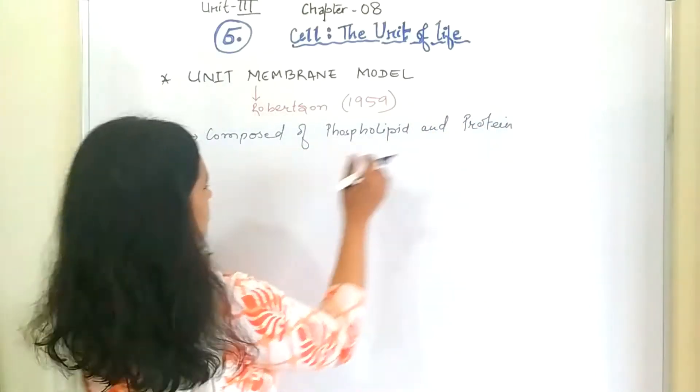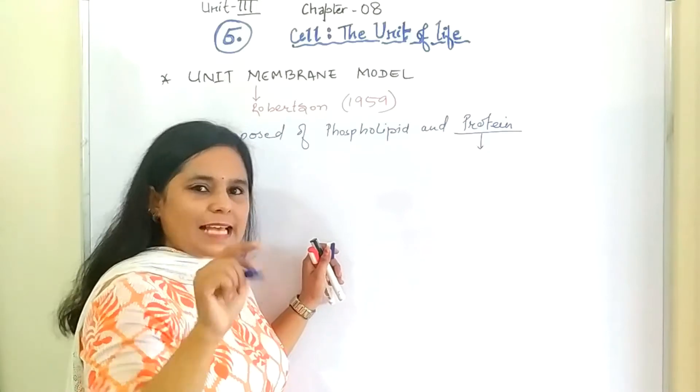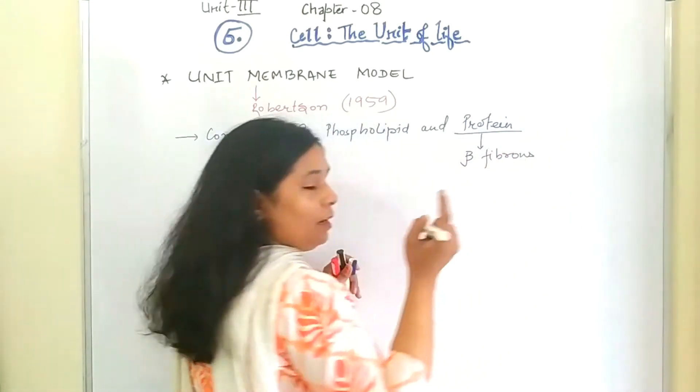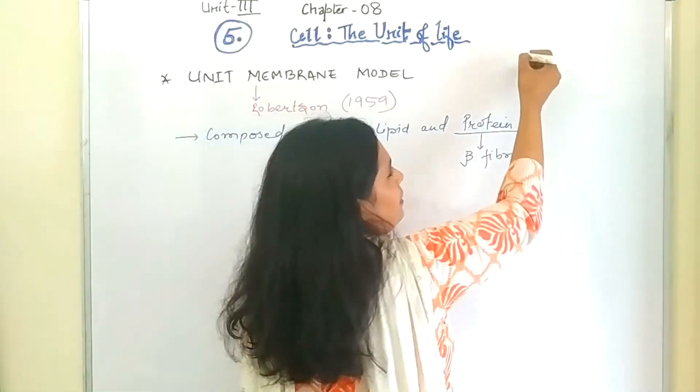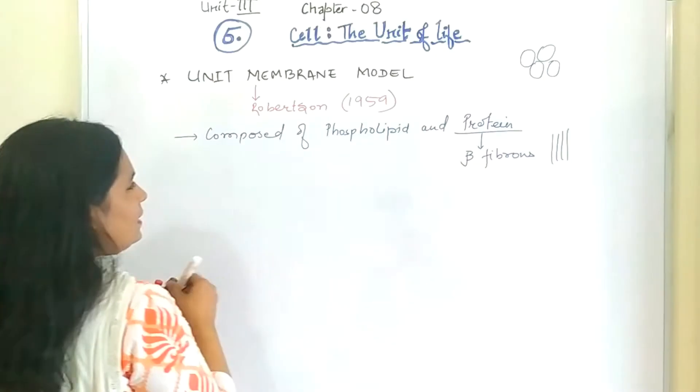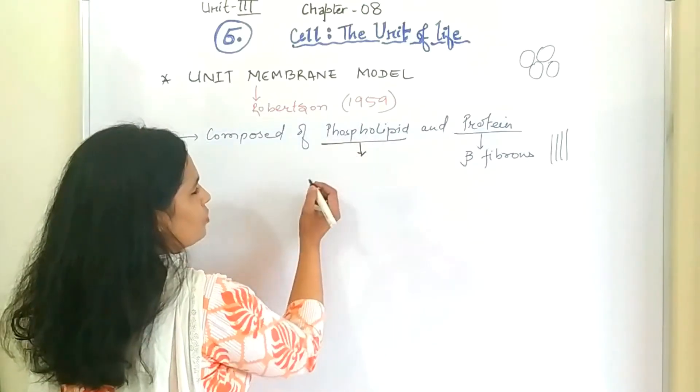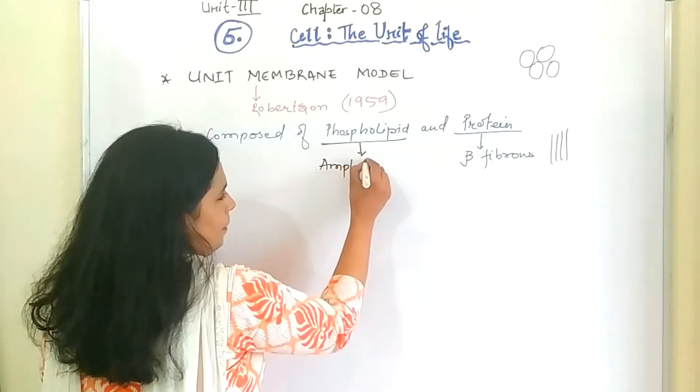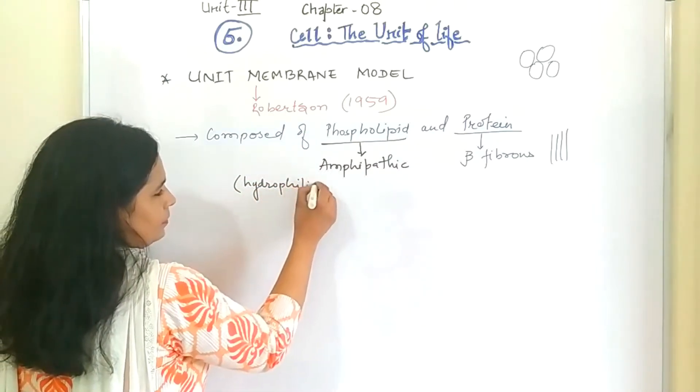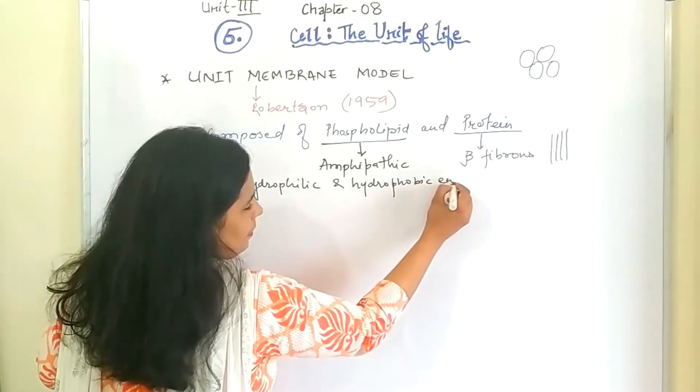These are the two main components. In this, the protein was different from what you have read in sandwich model. The protein was beta fibrous protein. Like in sandwich model, you have learned about the alpha globular. Means they were in this shape. But here the protein were fibrous, thread-like. Next is about the phospholipid. The same thing which was told about in sandwich model. That is phospholipid is amphipathic.